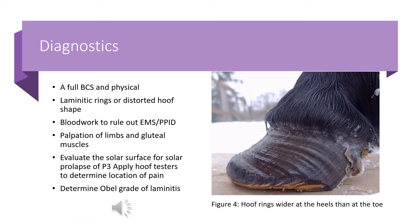To effectively diagnose laminitis, a full body condition score and physical examination should be performed to assess the overall health and weight of the animal. Often these horses will have a fever, increased heart rate, and a very strong or bounding digital pulse near the back of the fetlock, which is normally very faint. They may also have laminitic rings or a distorted hoof shape, as featured in this photo. Blood work is needed to rule out equine metabolic syndrome or pituitary pars intermedia dysfunction (PPID), also known as equine Cushing's disease.